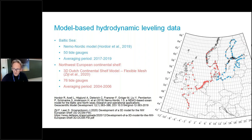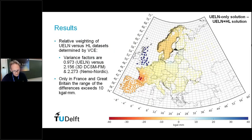I want to quickly show the results. What we did was we combined the UELN data with these two hydrodynamic leveling data sets. We estimated variance factors using variance component estimation to get the relative weighting factors correctly. What we learned is that the hydrodynamic leveling data sets were slightly down-weighted. If you look to the impact in terms of the adjusted geopotential numbers of the height benchmarks between the UELN-only solution and the one that includes hydrodynamic leveling data, we basically see an impact in the UK and in France.